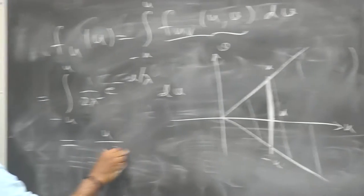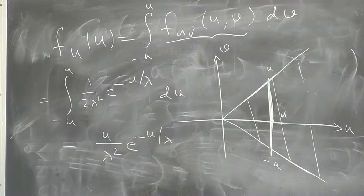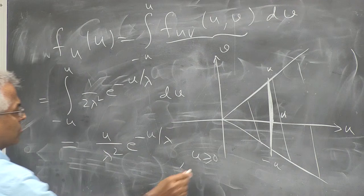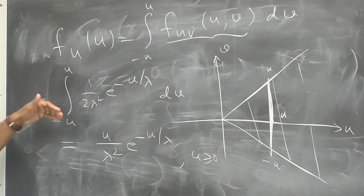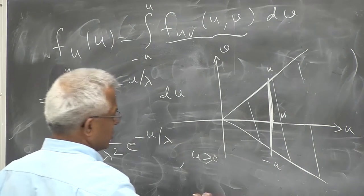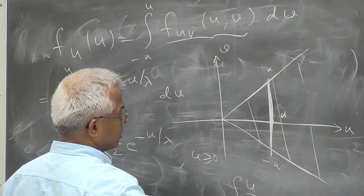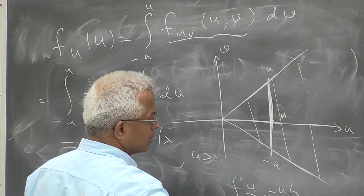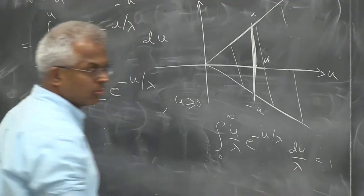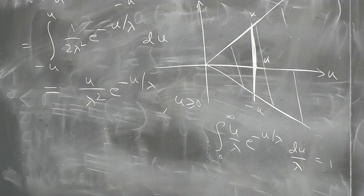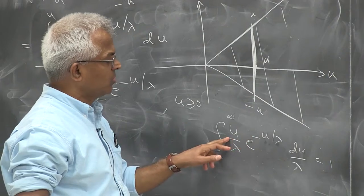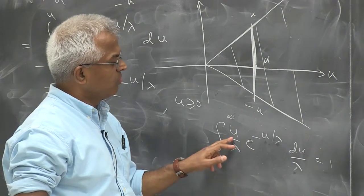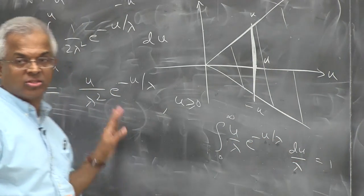Let us quickly check whether this is a valid density function. We have f_u(u) = (u/λ²)·e^{−u/λ} integrated from 0 to infinity, which equals (1/λ)·integral of (u/λ)·e^{−u/λ} d(u/λ). Substituting v = u/λ, this becomes the integral of v·e^{−v} dv from 0 to infinity, which equals 1. Yes, this is a valid density function.